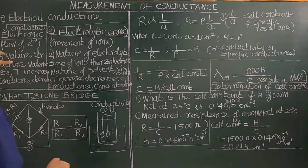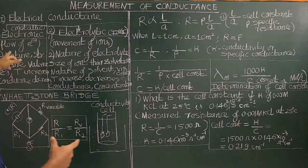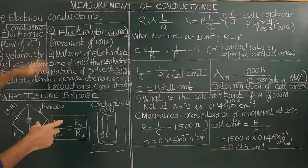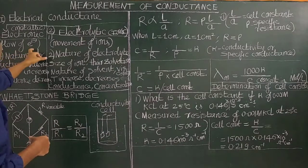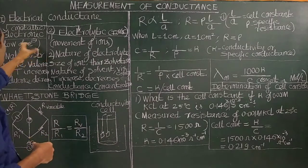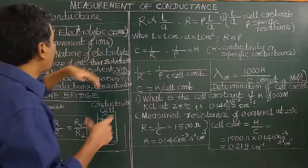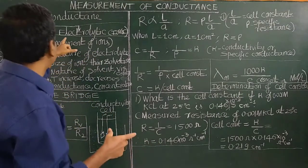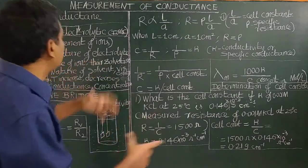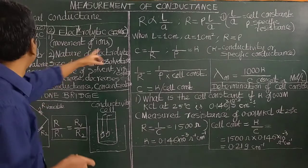In electrolytic conductance, the current is due to the flow of electrons. The conductance is due to the flow of electrons through the matter. The conductance occurs due to the movement of ions present in the electrolytic solution.